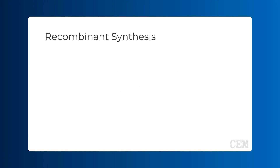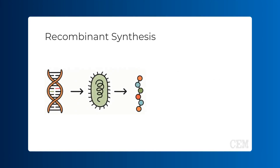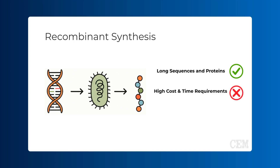Recombinant peptide synthesis involves producing peptides using genetically engineered organisms, such as bacteria or yeast, that express the desired peptide from an inserted gene. While recombinant synthesis is useful for long sequences and proteins, it comes with high cost and time requirements and is incompatible with sequences requiring non-standard amino acids or peptidomimetics.